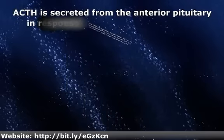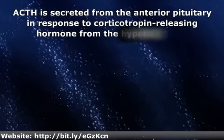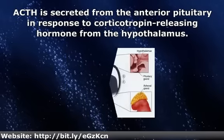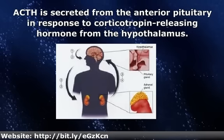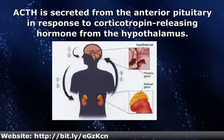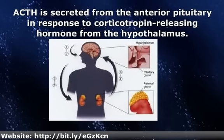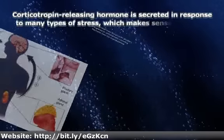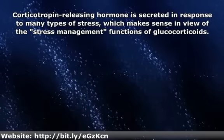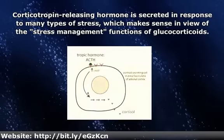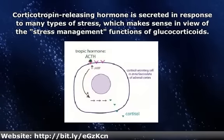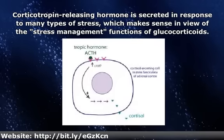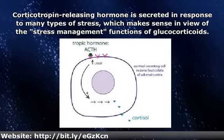ACTH is secreted from the anterior pituitary in response to corticotropin releasing hormone from the hypothalamus. Corticotropin releasing hormone is secreted in response to many types of stress, which makes sense in view of the stress management functions of glucocorticoids.